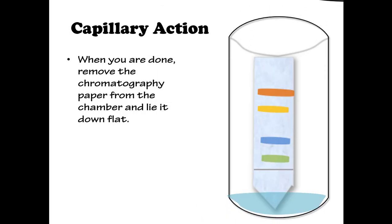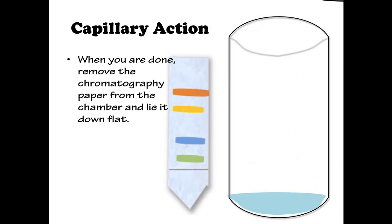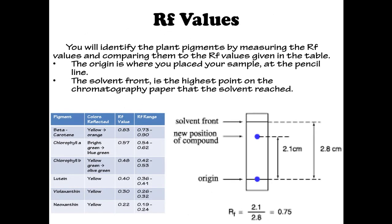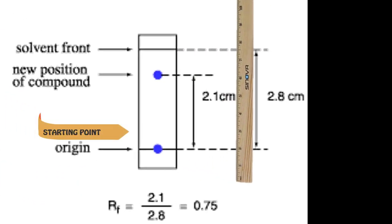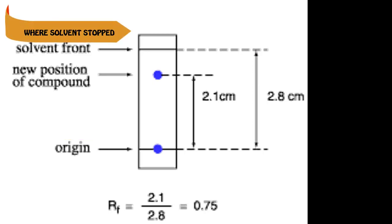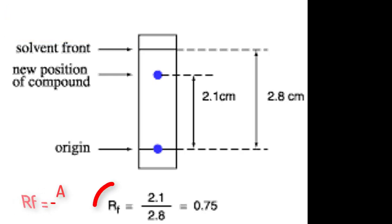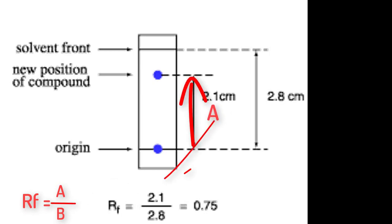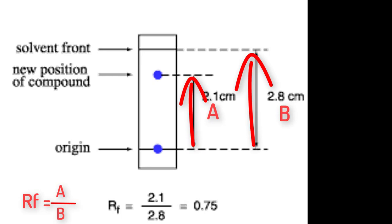When you are done, remove the paper from the chamber and lie it down flat. You will identify the plant pigments by measuring the RF values and comparing them to the RF values given in the table. The origin is where you placed your sample at the pencil line, and the solvent front is the highest point on the chromatography paper that the solvent reached. The RF value is the ratio of how far your compound traveled from the origin over the distance between the origin and the solvent front.